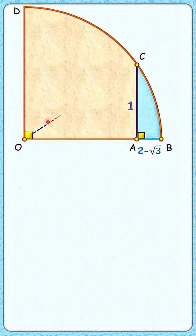Let's start by assuming the radius of the quadrant as r centimeters, and thus OA length will be r minus (2 - √3).